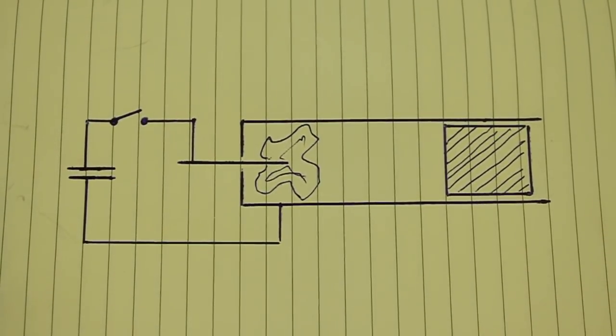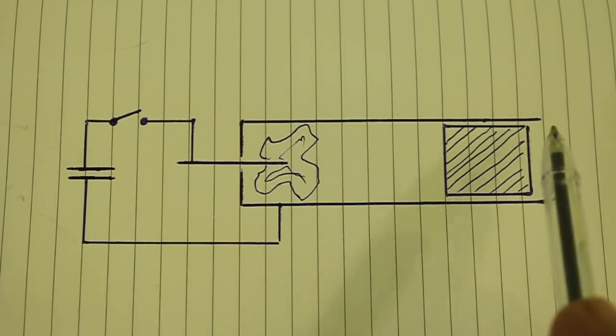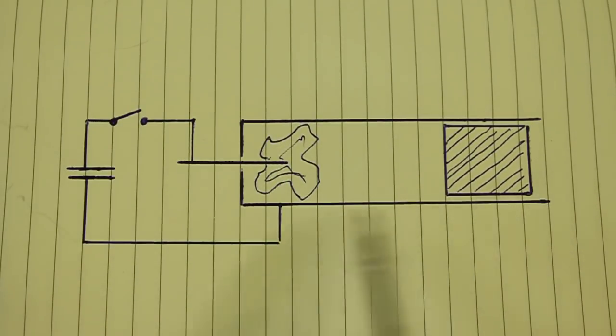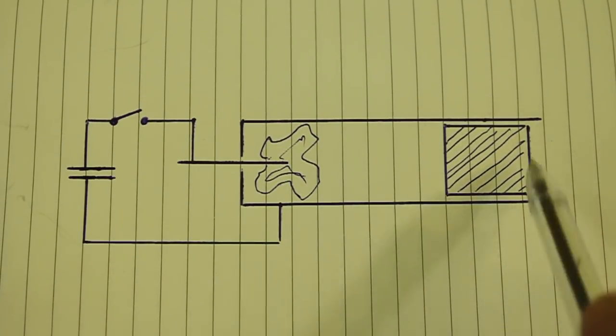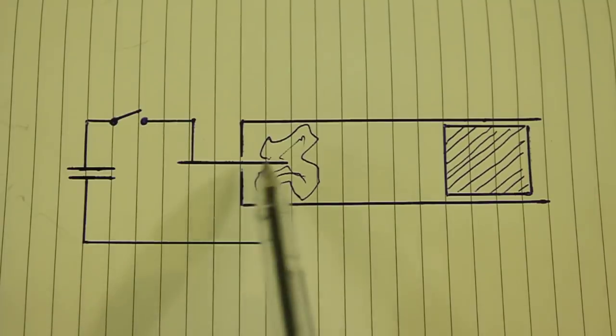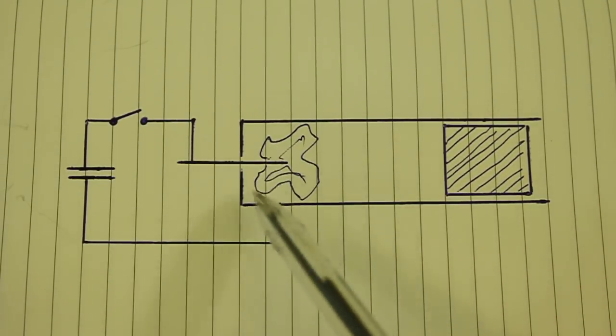The principle of operation is very simple. Here we have a copper tube, this is the projectile. Here we have an electrode and this is just a piece of aluminum foil.